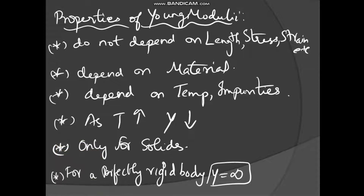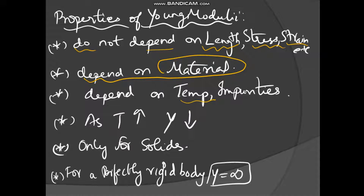Now let us see the properties of Young's modulus. First, it does not depend on dimensions — that is, it does not depend on length or area — and it does not depend on the applied stress or strain. It depends on the material, so it varies for different materials. It also depends on impurities and temperature: as temperature increases, Young's modulus decreases — a very important relation. At the end of this video, we will see a numerical based on this concept.